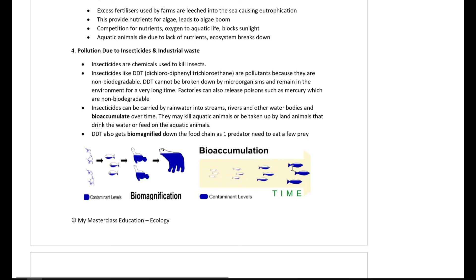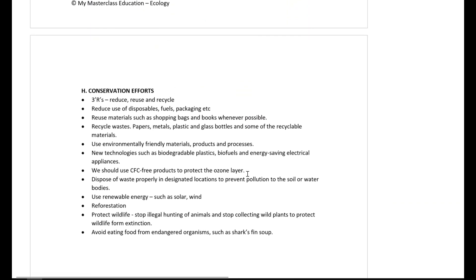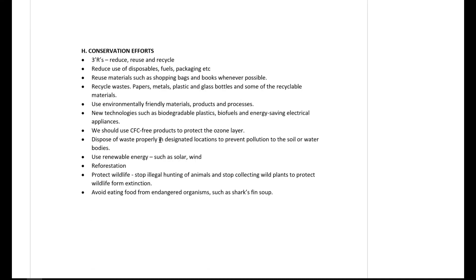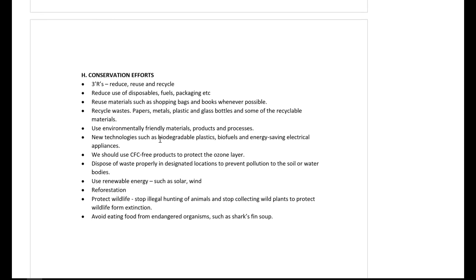Bioaccumulation simply describes how toxins accumulate within organisms over time. Pollutants such as insecticides and mercury tend to accumulate in animals and magnify up the food chain, because predators must consume increasing amounts of prey. To preserve the environment, common approaches include the use of renewable energy — know about two to three examples for your exam.